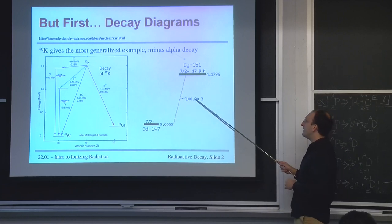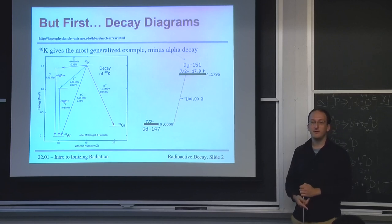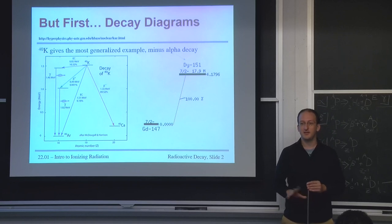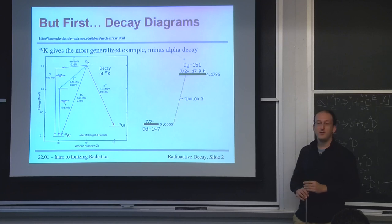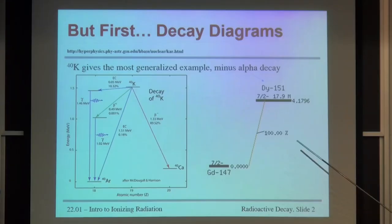Up here is the parent nucleus. Down there is the daughter nucleus. These energies are relative to the ground state of whatever the daughter nucleus is. This simple example helps show you that gadolinium-147 doesn't have a binding energy of 0. This is relative to the ground state. That will tell you that the Q value for this reaction is 4.1796 MeV.